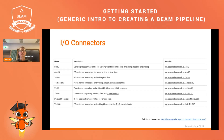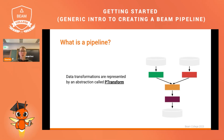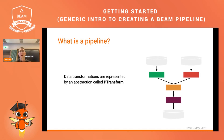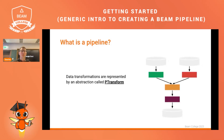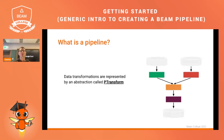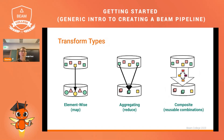When it comes to transformations within a data processing pipeline — manipulating or aggregating data — we are talking about an abstraction called PTransforms. Several types of transformations are offered within Beam. Today we will focus on three of them: element-wise transforms, aggregation transforms, and composite transforms.